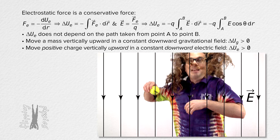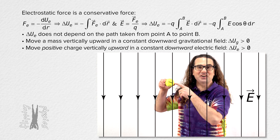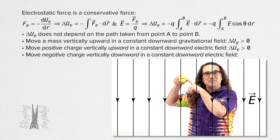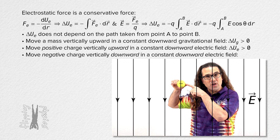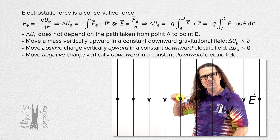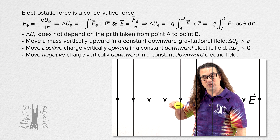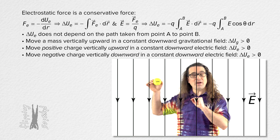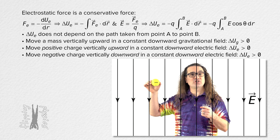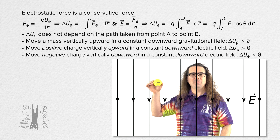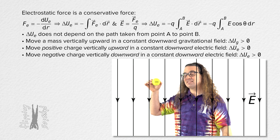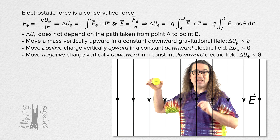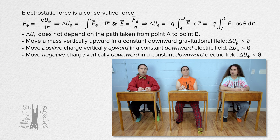If I change the charge to a negative charge and move the negative charge in the direction of the electric field, what happens to the electric potential energy? It actually increases. If I move a negative charge in the direction of the electric field, it gains electric potential energy. And if I let go of the negative charge, it accelerates opposite the direction of the electric field.